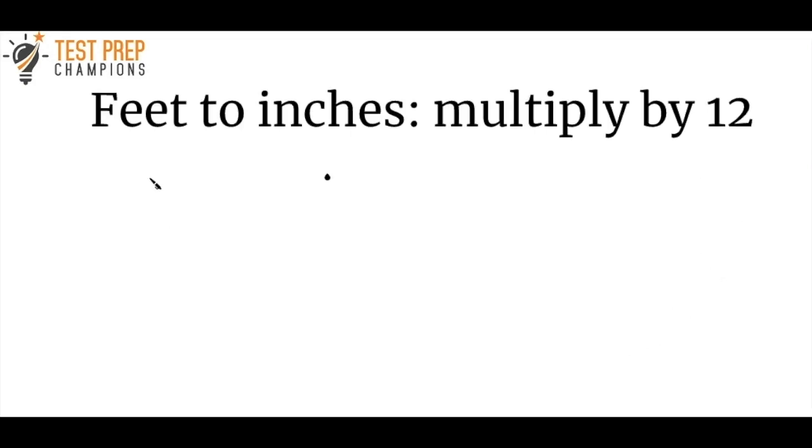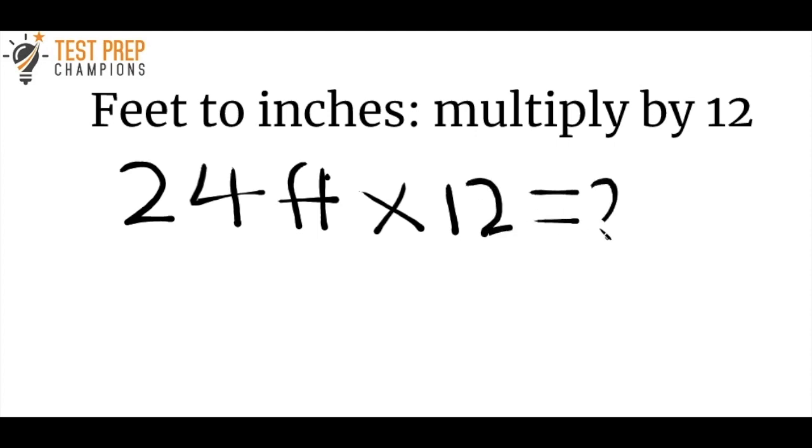So to go from feet to inches, all you have to do is multiply by 12. Let's look at an example. Let's say you're given 24 feet and you want to go to inches. All you have to do is multiply by 12. So 24 times 12. If we put that in the calculator, we'll get 288 inches.